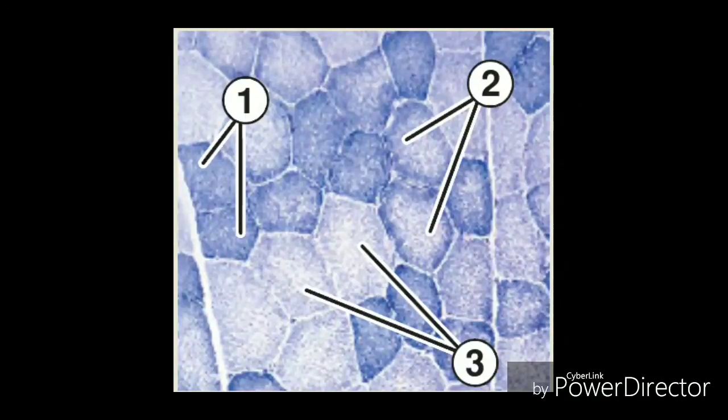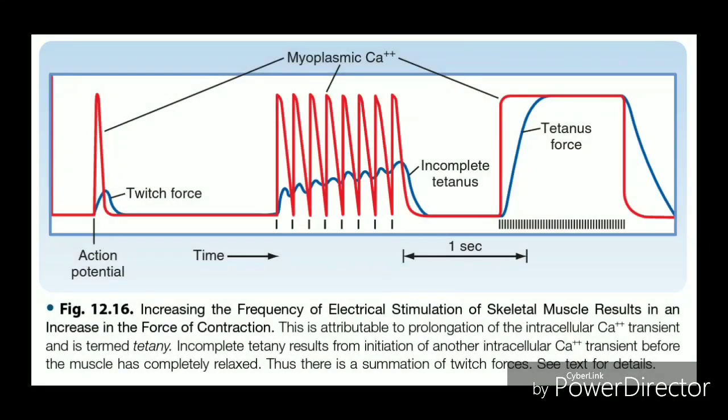Obviously our muscles are capable of generating differing levels of force during whole muscle contraction. Some actions require much more force generation than others. Think of picking up a pencil compared to picking up a bucket of water. One way to increase the amount of force generated is to increase the number of motor units that are firing at a given time. We say that more motor units are being recruited. The greater the load we are trying to move, the more motor units that are activated.